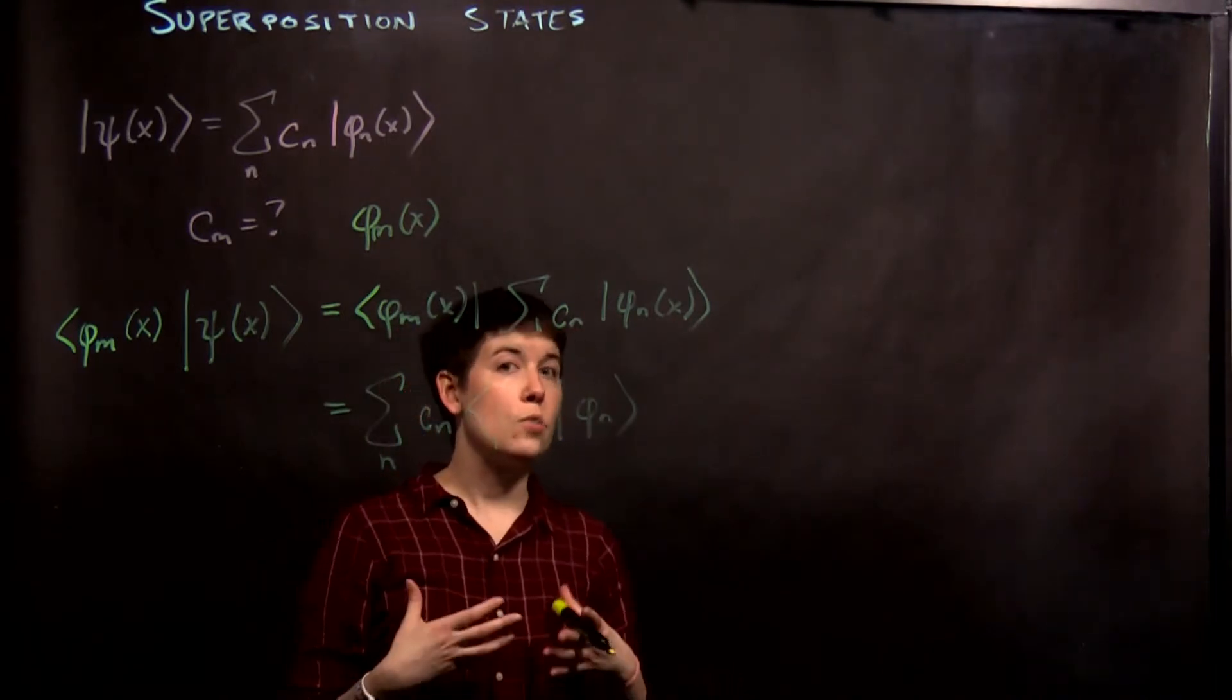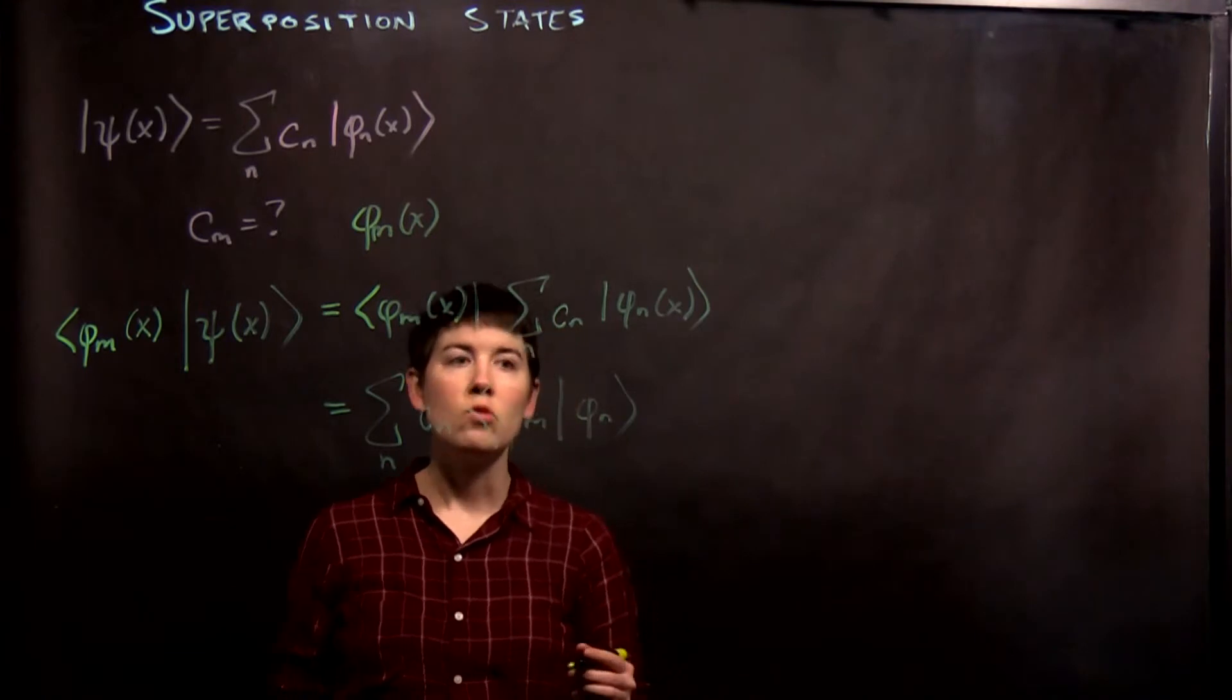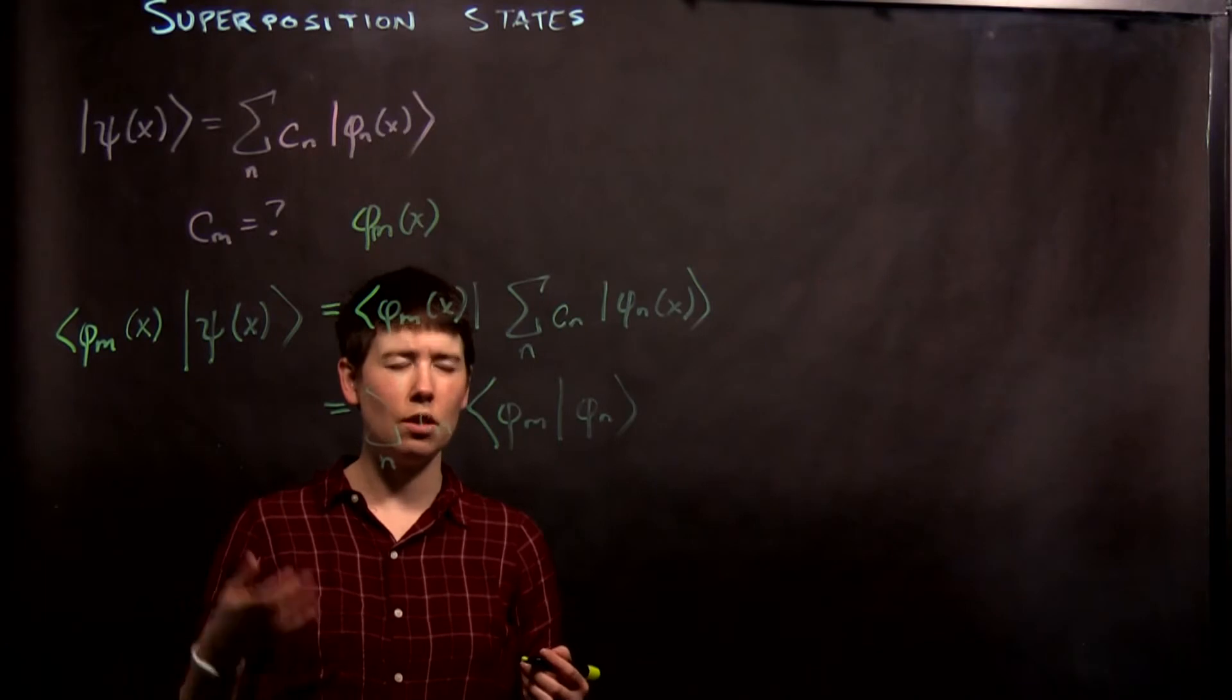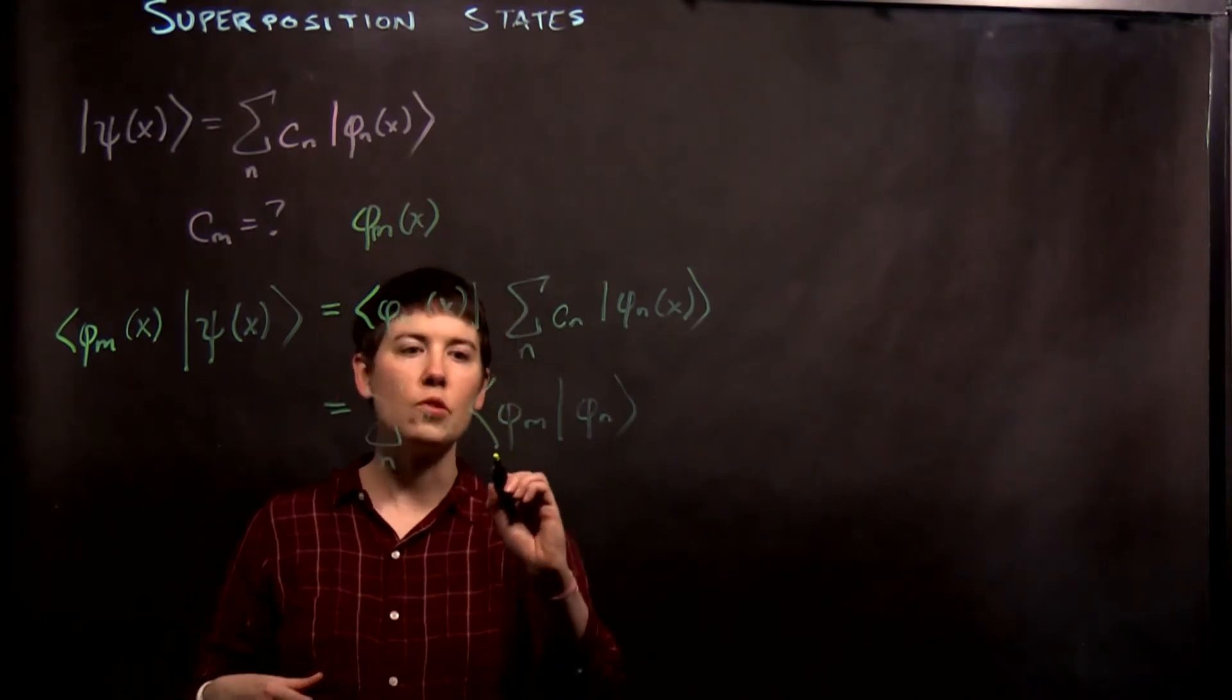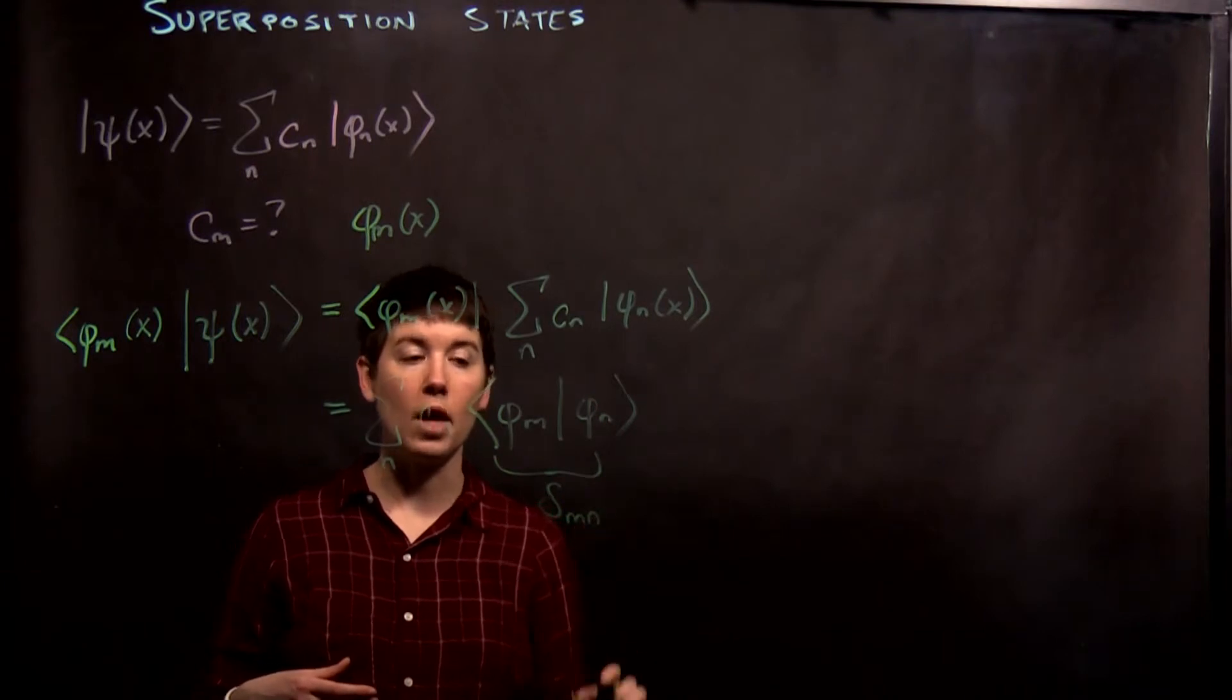and this is where we use that idea of the orthonormality of our states. So if m does not equal n, it's 0. If m equals n, this is equal to 1. So that's where we use our delta function, mn.